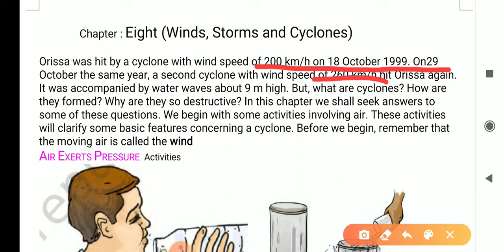In this chapter, we will seek answer to some of these questions. We begin with some activities involving air. These activities will clarify some basic features concerning a cyclone. Now, before we begin, remember that the moving air is called the wind.